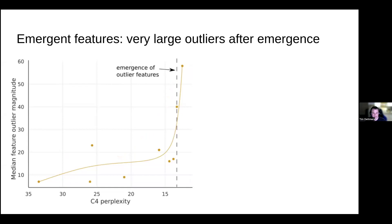Our last finding, which is critical for quantization: once emergence happens, the median outlier magnitude increases rapidly, going to values of 40 and 60. For larger models like OPT 66 billion and 30 billion, it levels off — the largest models seem to have outliers of about 100 in size. So the full curve would be flat, then rapidly increasing, then flattening off again — a kind of logistic curve. This is the main reason we see problems at scale and problems in quantization with 6.7 billion parameters: after emergence, very large outliers destroy our quantization.